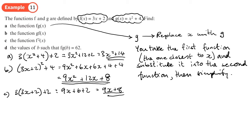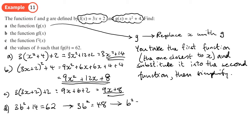The last part is just solving an equation — find the values of b such that f(g(b)) = 62, expecting two answers. Because we've got b in brackets, we use the letter b. From part a, f(g(x)) = 3x² + 14, so we write 3b² + 14 = 62. Taking 14 from both sides gives 3b² = 48, dividing by 3 gives b² = 16, so b = ±4.